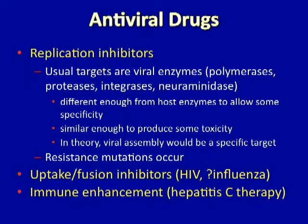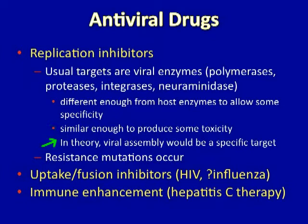The topic of antiviral drugs is a very large one. To make some general statements: replication inhibitors usually target viral enzymes such as polymerases, proteases, integrases, or neuraminidases. These viral enzymes are different enough from host enzymes that drugs can be produced to inhibit their action without inhibiting similar host enzymes. Viral assembly should also in theory be a specific target since there is no similar process inside the host cell. The problem with replication inhibitors is that many viruses can produce mutations that induce resistance, simply by changing a single amino acid or two in the target proteins.